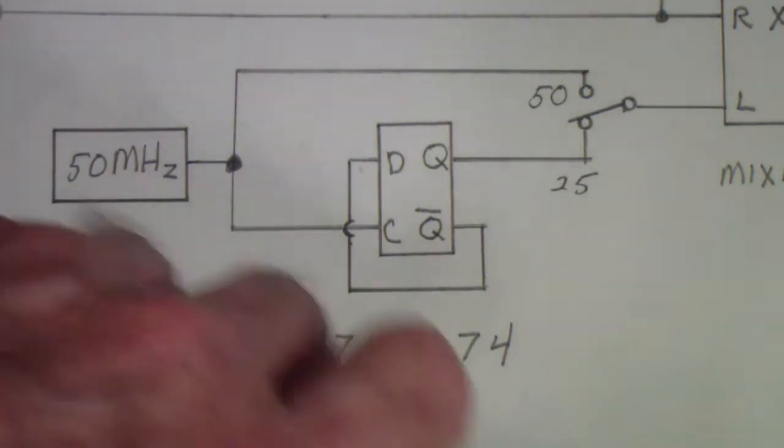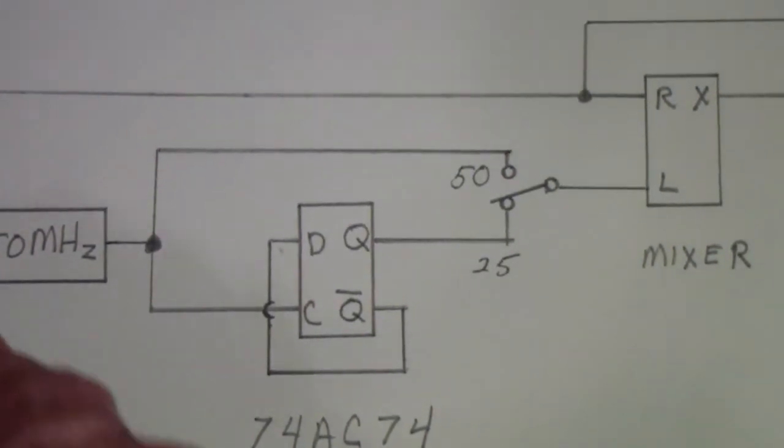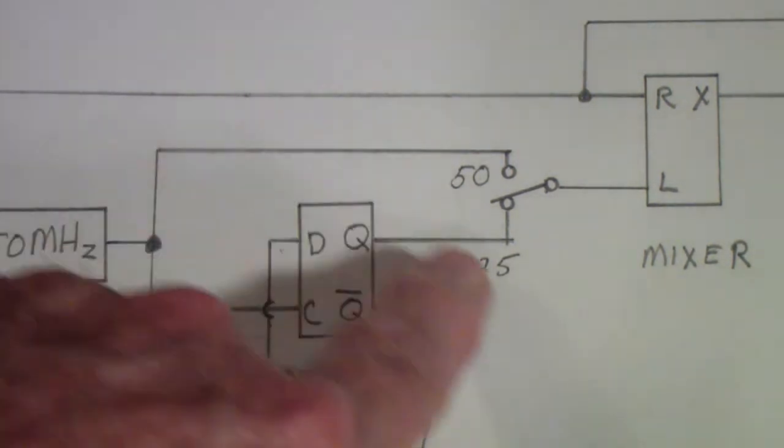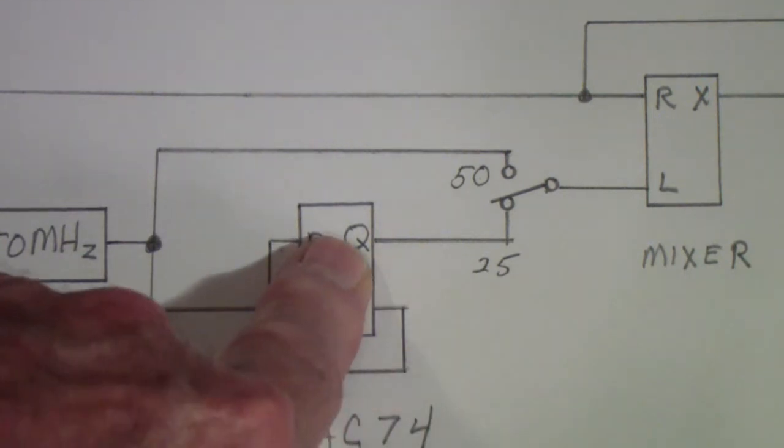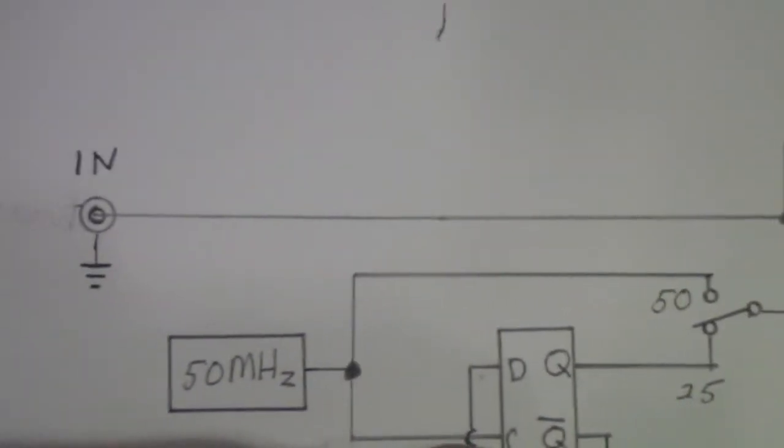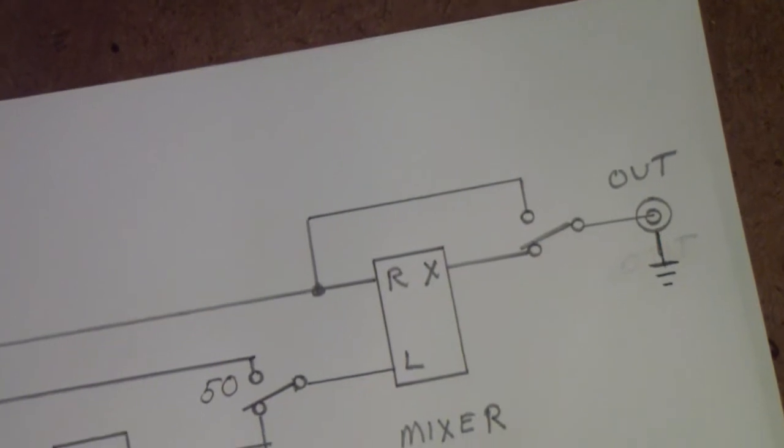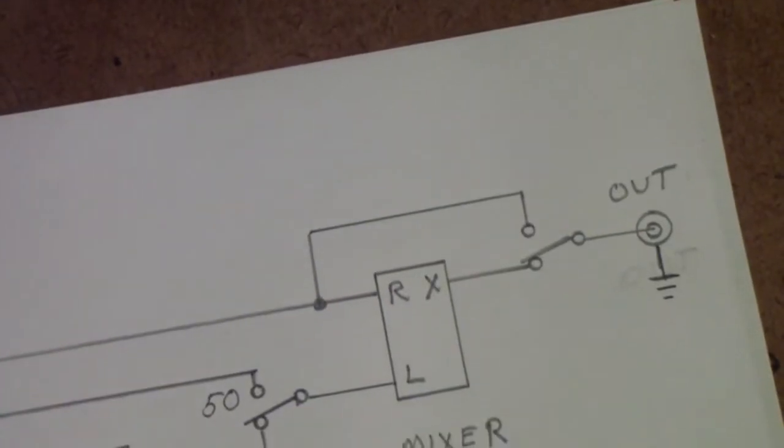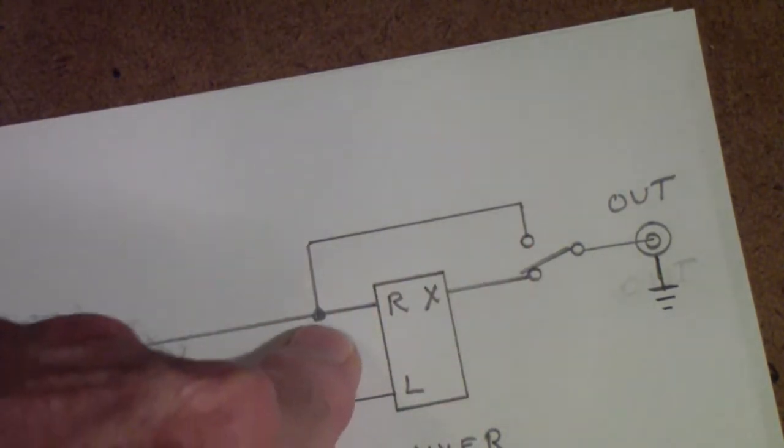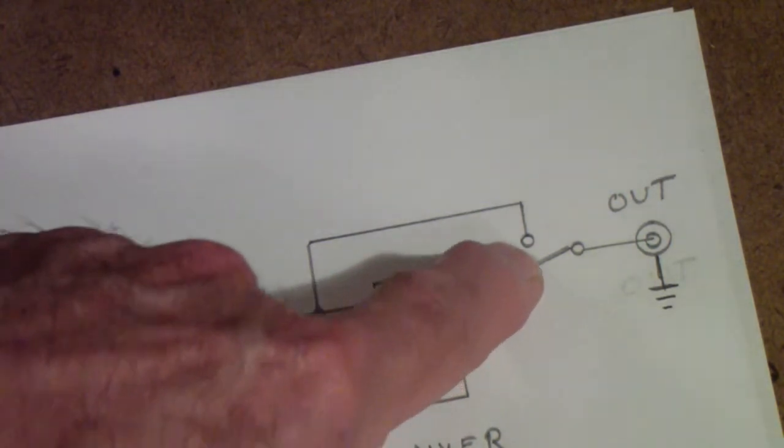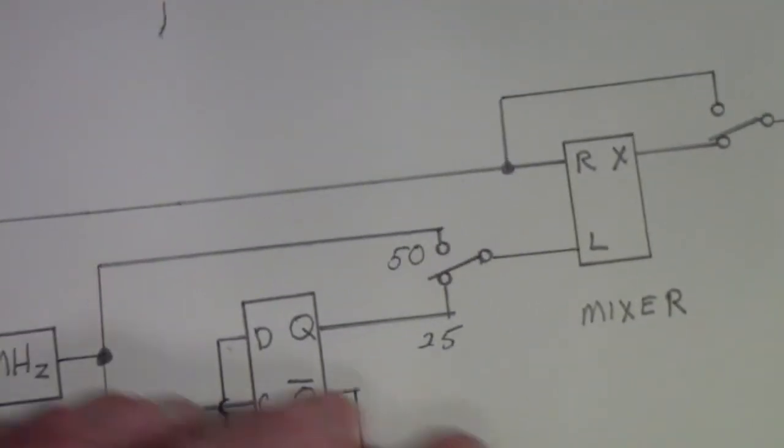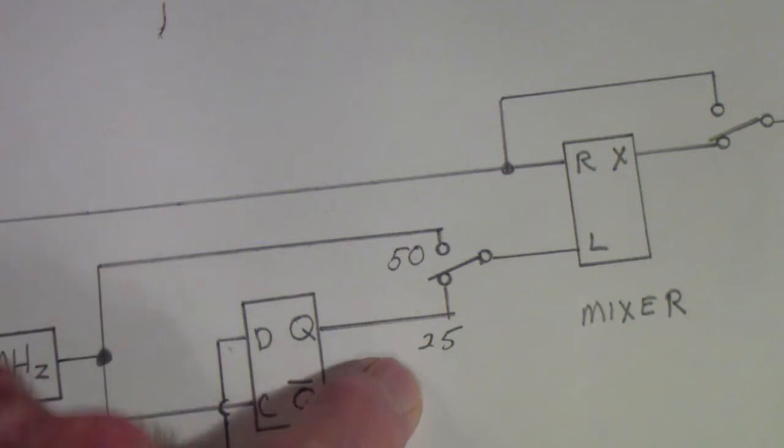Then what I would do is provide a switch on the output that allows you to select between 50 megahertz, the output of the oscillator, or 25 megahertz, the output of the divide-by-2, and apply that to the mixer along with the input signal. I would put a switch on the output that would allow me to select between the mixer output and the straight-through. This way you could either select straight-in or mixer out, and then once you select mixer out you could select either 50 megahertz or 25 megahertz.